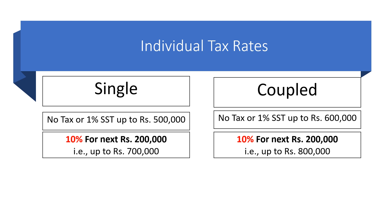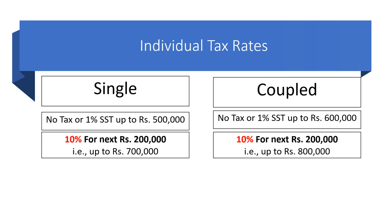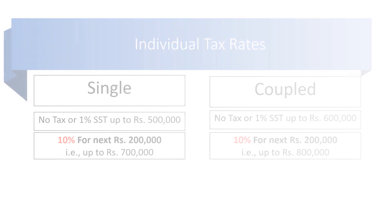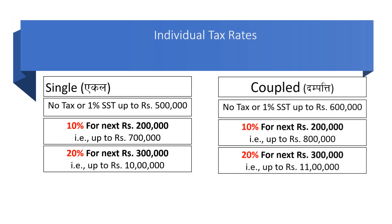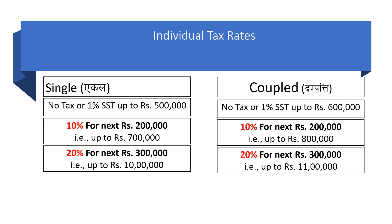If your income exceeds seven lakh and is up to ten lakh, as an individual you have to pay twenty percent. Similarly, if you are a couple, the twenty percent slab applies up to eleven lakh.